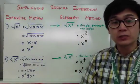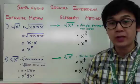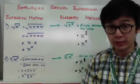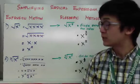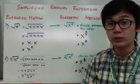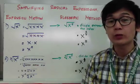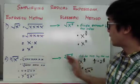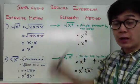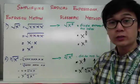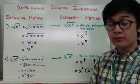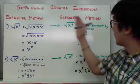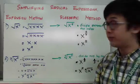I'm going to separate my solution into an expansion method and an algebraic method. The expansion method gives a more visual representation of how we simplify radical expressions. I want you to become comfortable using the law of exponents and the algebraic method to visualize and simplify your expressions.